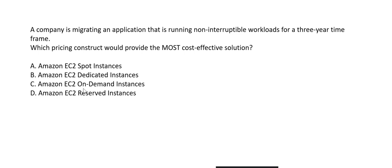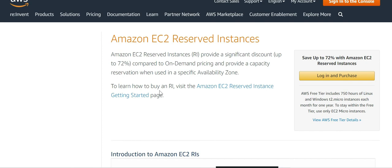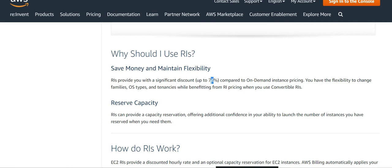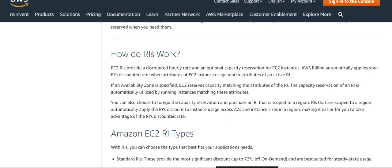EC2 On-Demand is cost-effective compared to dedicated and supports non-interruptable workloads, but EC2 Reserved Instances is even more cost-effective. Reserved Instances provide non-interrupted workloads and offer up to 72% discount compared to On-Demand pricing. So the correct answer is EC2 Reserved Instances, which saves money while maintaining flexibility.